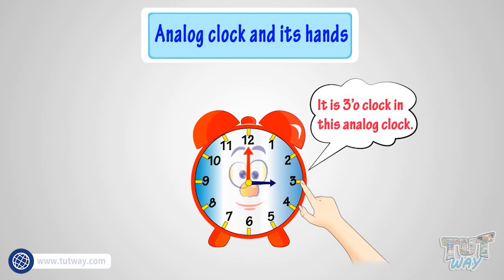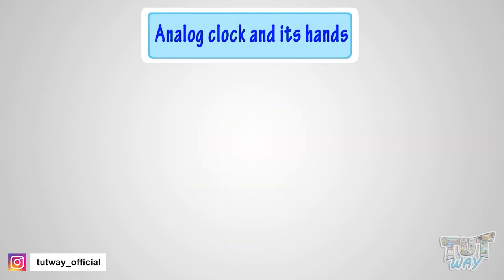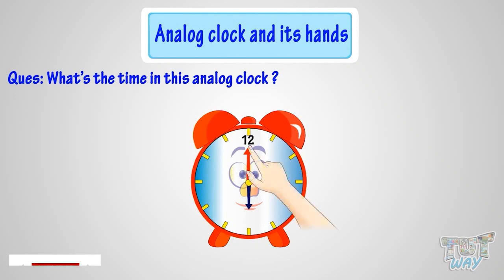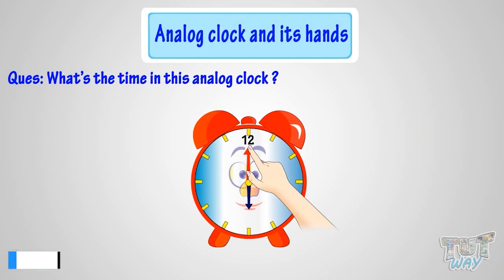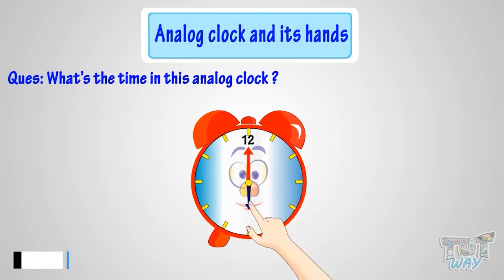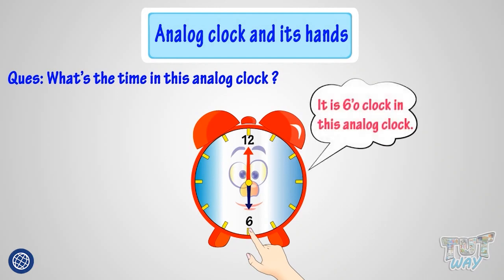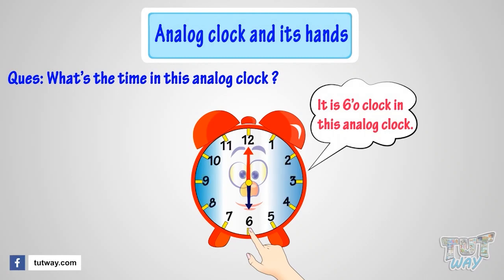Here we have another example. Can you tell me what's the time in this analog clock, where no numbers are written? This is the place of number 12, so the minute hand is pointing at number 12 — it's time to the hour. But to which hour? The hour hand tells the hour. This place is of number 6, where the hour hand is pointing. So, it's 6 o'clock. Kids, you need to remember the places of various numbers on the clock.